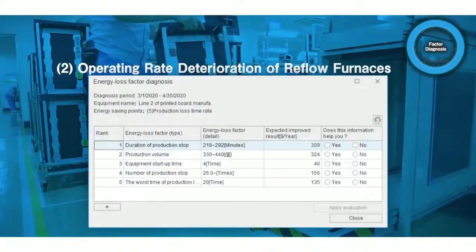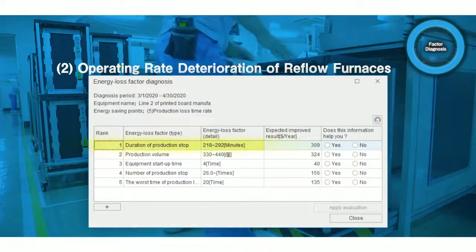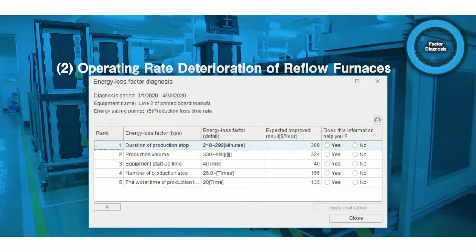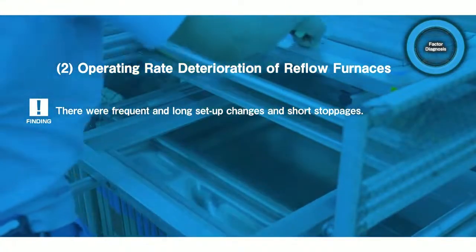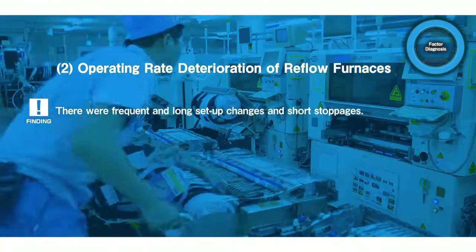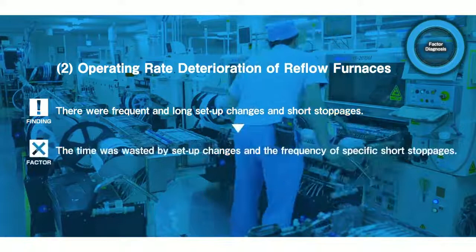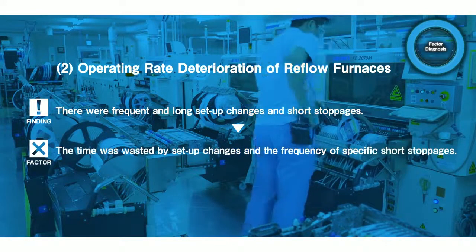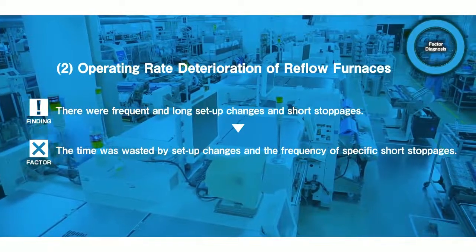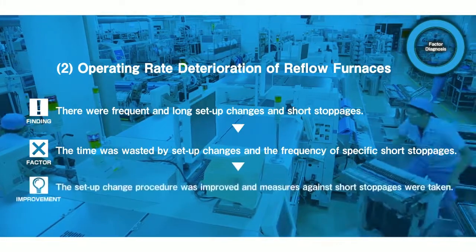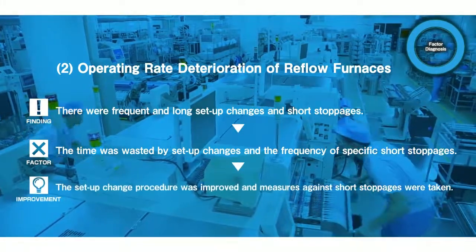As for the operating rate deterioration of reflow furnaces, the diagnostic result shows that long and frequent stoppages of production are pointed out as factors of loss. This led to the assumption that there was loss caused by setup changes and short stoppages. When they checked the production site, there was definitely loss due to setup changes at the mounter in the previous process and specific short stoppages. They improved their productivity by taking measures such as shortening the setup time by adding jigs to supply parts.